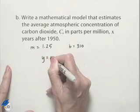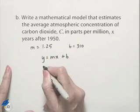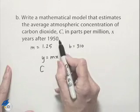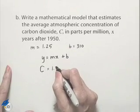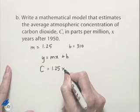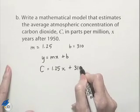So in my equation, y equals mx plus b, we come up with our C value as our y value, that's in parts per million, equals our m value of 1.25. We have x standing for the number of years after 1950, plus our b value of 310.